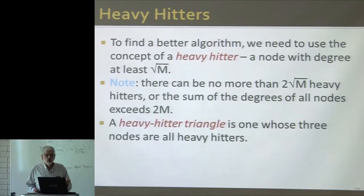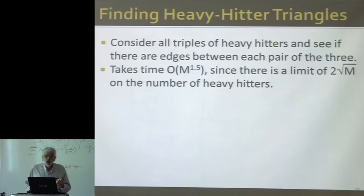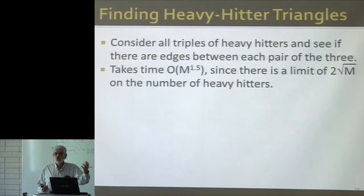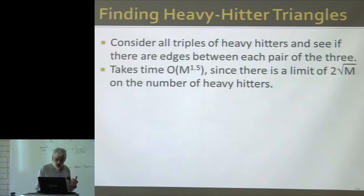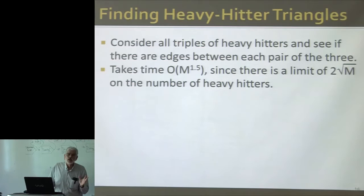Let's call a triangle a heavy hitter triangle if all three of its nodes are heavy hitters. I can find the heavy hitter triangles in relatively little time. First I figure out which nodes are heavy hitters — that doesn't take much time. Since there are only order square root of m heavy hitters, the number of triples of heavy hitters is at most order m to the 1.5. So I can look at all triples of heavy hitters, check whether the three edges exist, and find all heavy hitter triangles in time order m to the three halves.